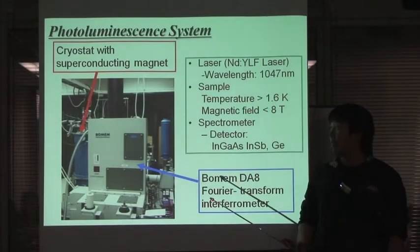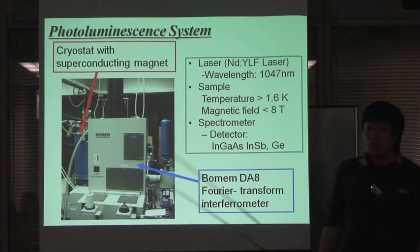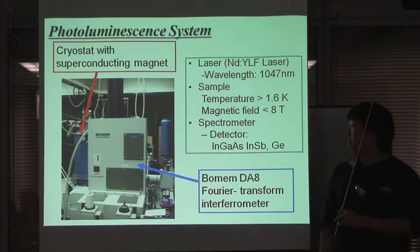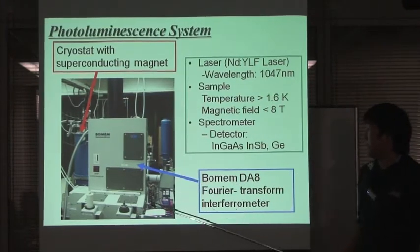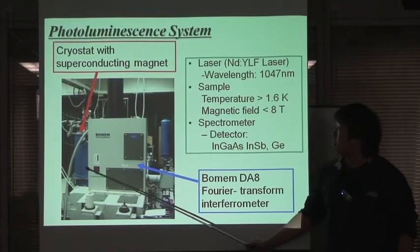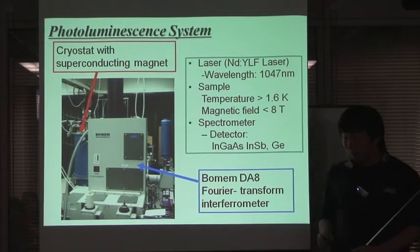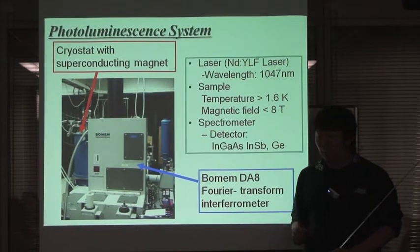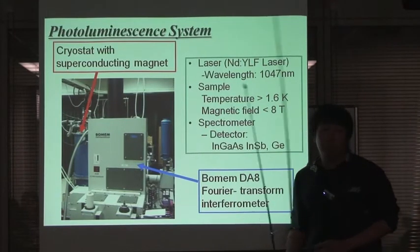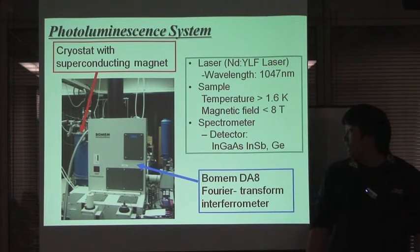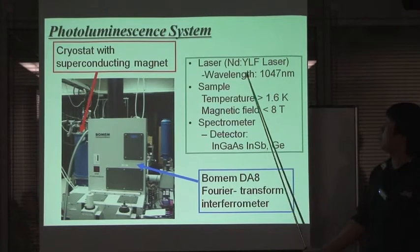Before I show the results, I will explain the photoluminescence equipment. The photoluminescence measurements were performed with a Bomem DA8 Fourier transform interferometer and a cryostat with a superconducting magnet. The magnetic field was applied parallel to the light axis. The PL spectra were collected from the samples in the cryostat in a strain-free manner. The excitation was provided by the 1047 nanometer line of the Nd:YAG laser.